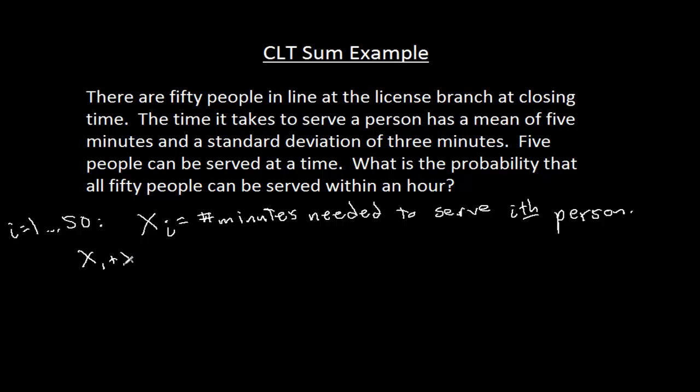Then, if we add together all of those random variables, that's how many minutes of service the license branch still needs to give. We got 50 people, and each of these random variables is how many minutes they need to be served. This is the total minutes needed.